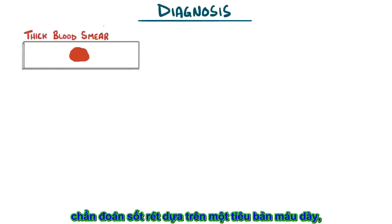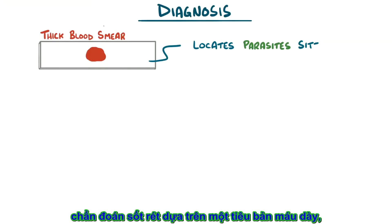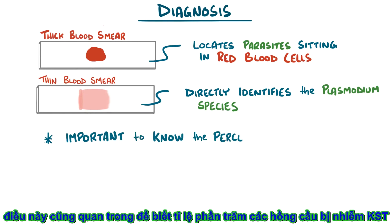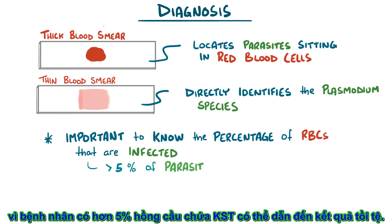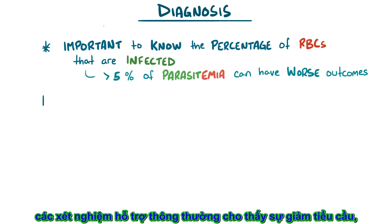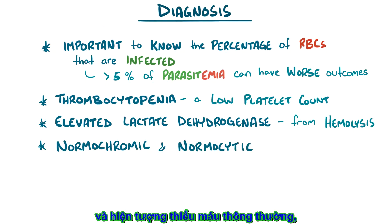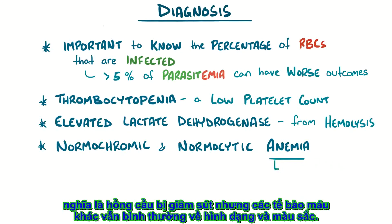Malaria is usually diagnosed with a thick blood smear that locates parasites sitting within the red blood cells, and a thin blood smear, which directly identifies the plasmodium species. It's also important to know the percentage of red blood cells infected by a parasite, because patients with greater than 5% parasitemia can have worse outcomes. Some common lab findings include thrombocytopenia (a low platelet count), elevated lactate dehydrogenase levels due to hemolysis, and a normochromic-normocytic type of anemia, meaning that the red blood cells are few in number but those that remain are of normal size and color.